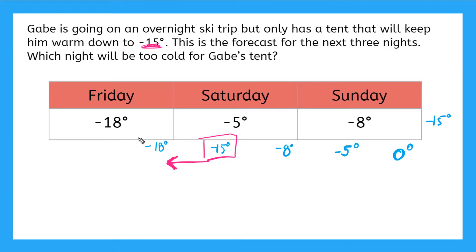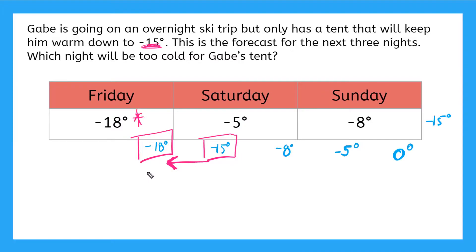Negative 18 degrees would be the night that it's too cold for Gabe's tent. So which of these nights is too cold? That's right, Friday! So this is the night that Gabe can't go on his ski trip.